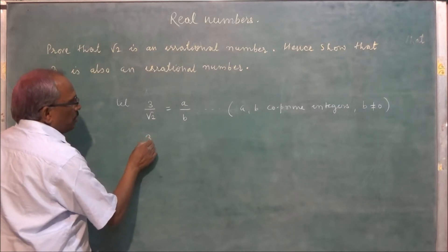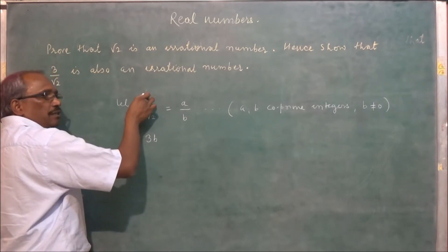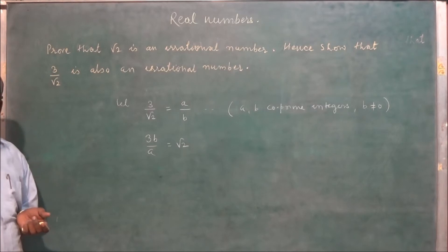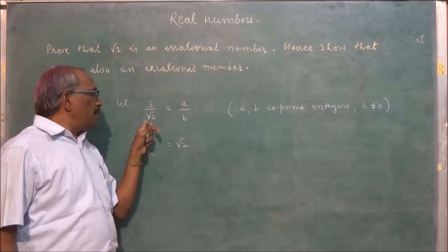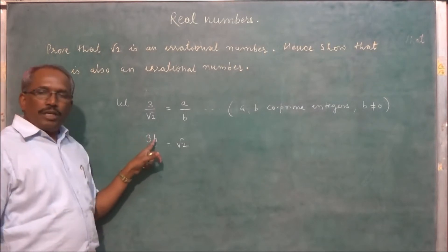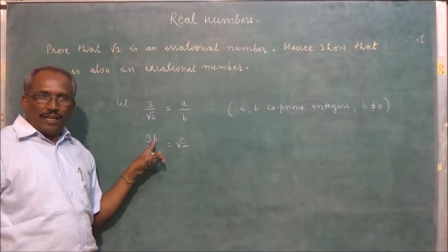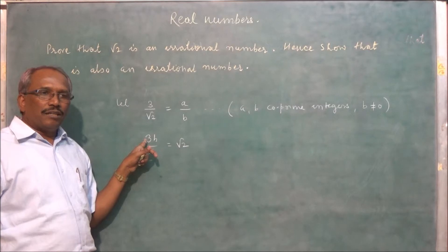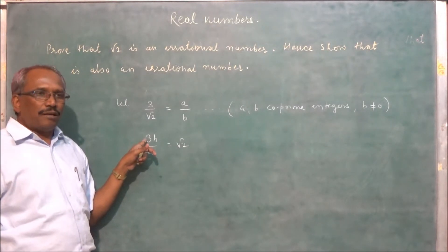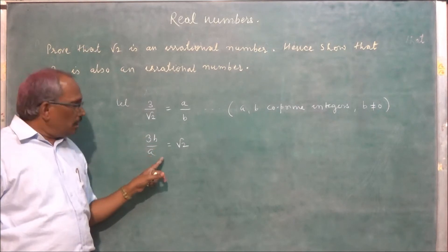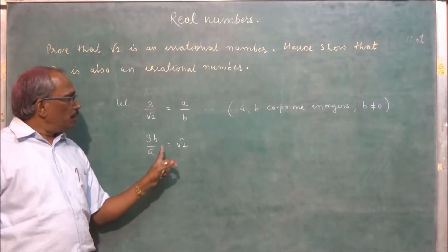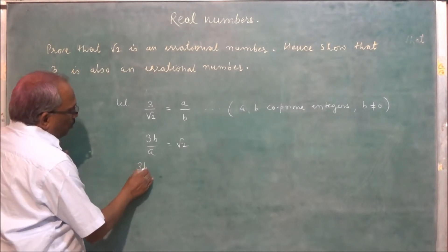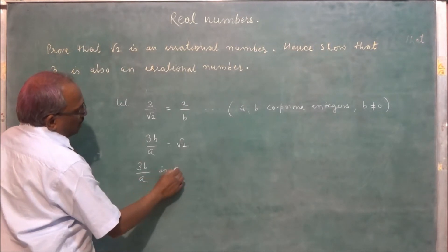So this can be written as 3b upon a is equal to root 2. The left hand side will be a rational number, but root 2 is an irrational number, so 3b upon a is a rational number while root 2 is irrational — this is a contradiction.